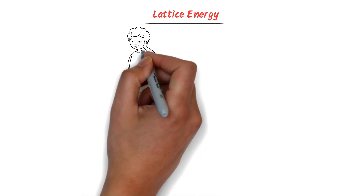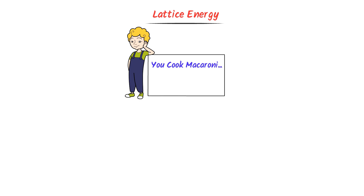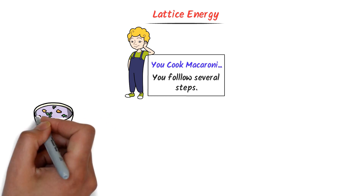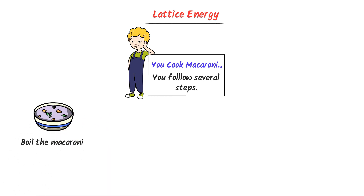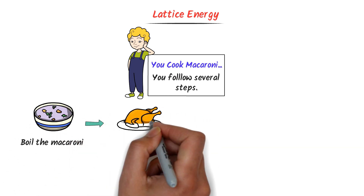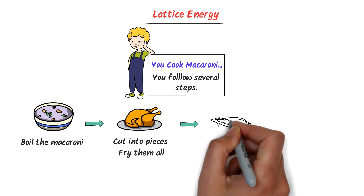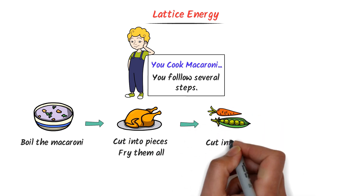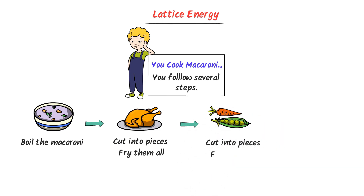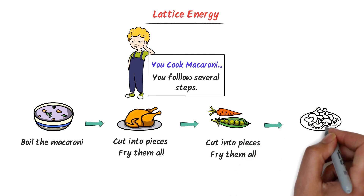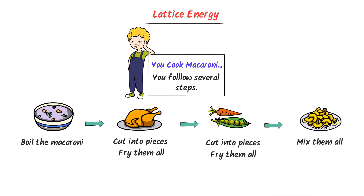Let's consider that you are going to cook macaroni. We all know that you will cook it step by step. For example, you boil the macaroni. Secondly, you take the chicken, cut it into small pieces and fry them. Thirdly, you take some vegetables, cut them into small pieces and fry them. Lastly, you mix them all and your macaroni is ready.